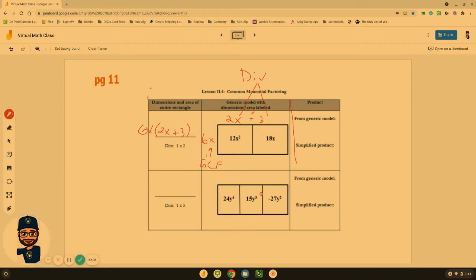See if you can't try that with the third one. Pause the video and see if you can't factor out the GCF. So again our GCF goes right out in front. Greatest common factor 24, 15, and negative 27 is going to be 3. We have a 3. Y to the 4th, Y to the 3rd, Y to the 2nd. They all have Y to the 2nd in common.